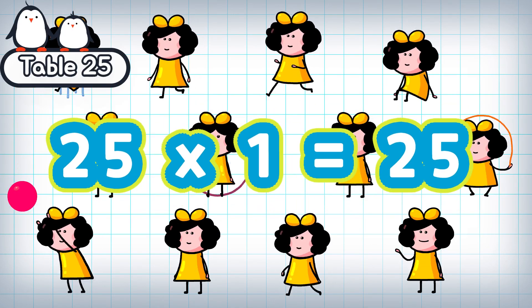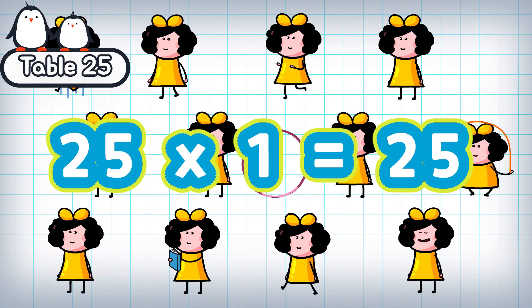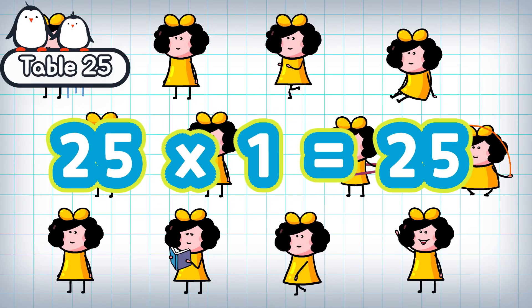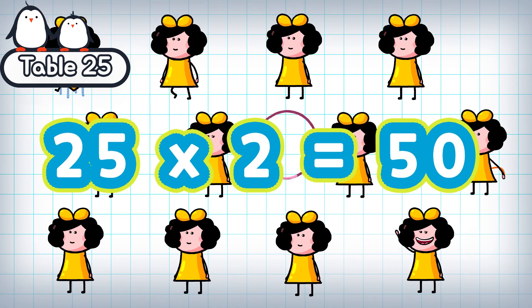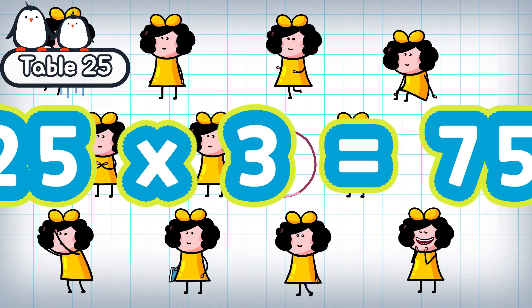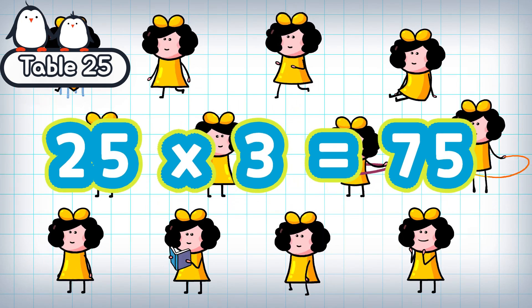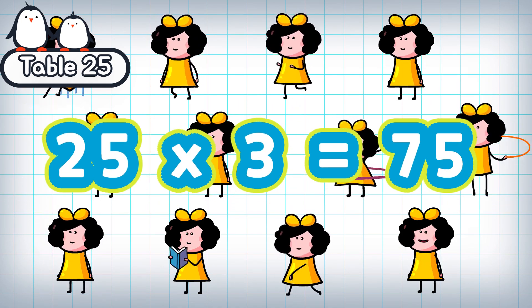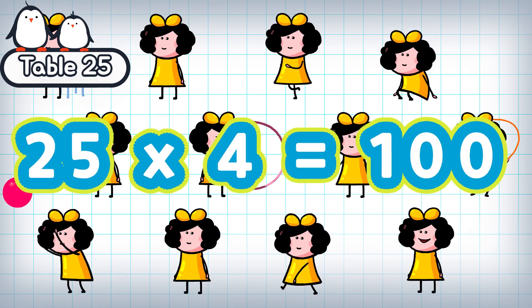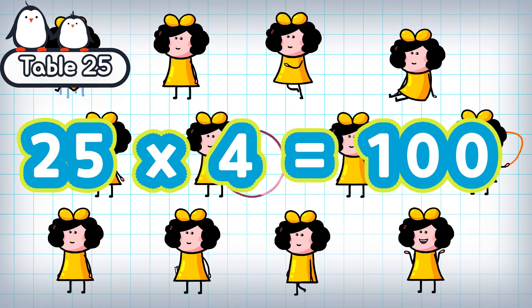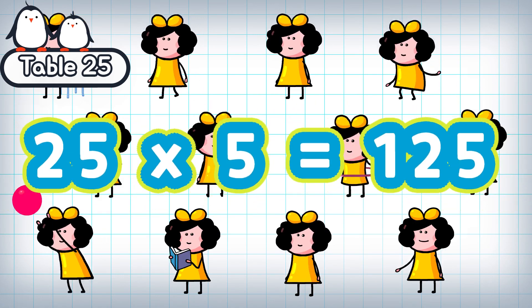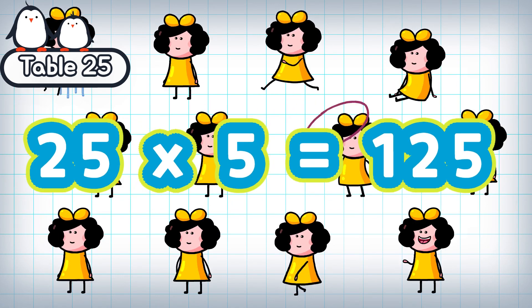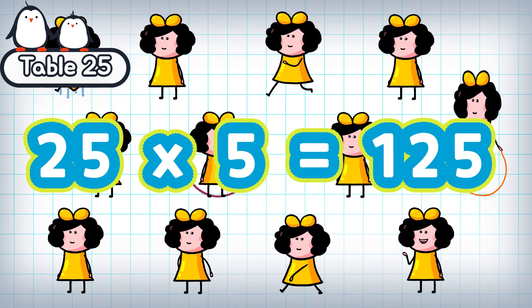25 times 1 is 25. 25 times 2 is 50. 25 times 3 is 75. 25 times 4 is 100. 25 times 5 is 125.